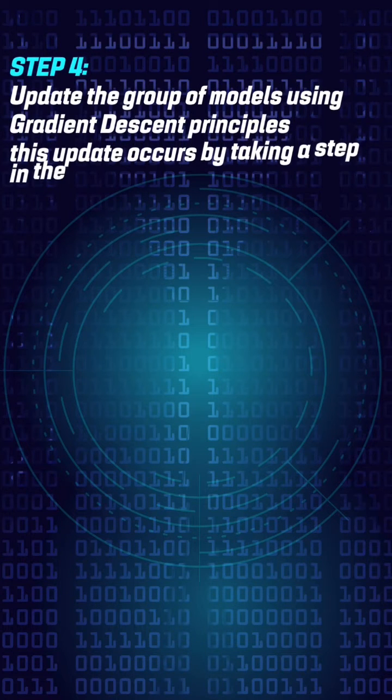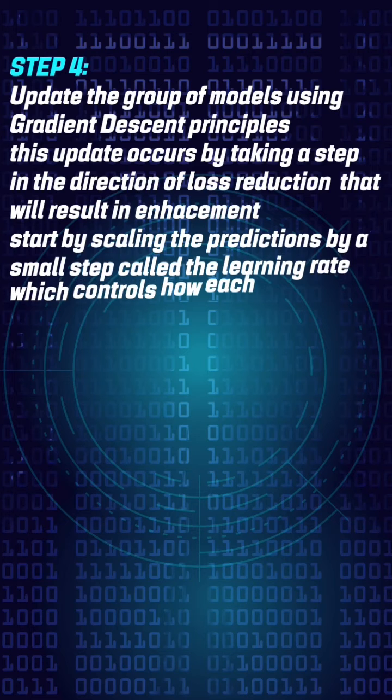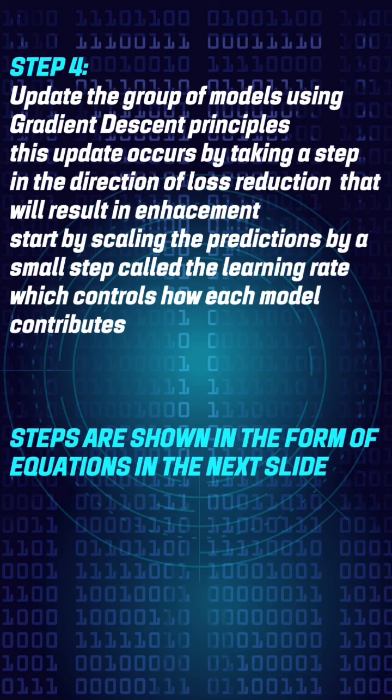Step 4: Update the group of models using gradient descent principles. This update occurs by taking a step in the direction of loss reduction that will result in enhancement. Start by scaling the predictions by a small step called a learning rate, which controls how each model contributes.